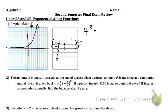For problem number 2, you're asked the amount of money A accrued at the end of T years when a certain amount P is invested at a compound annual rate. R is given by that equation. If a person invests $160 in an account that pays 7% interest compounded annually, find the balance after 5 years.